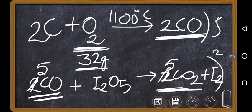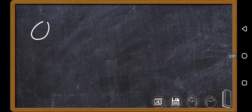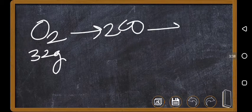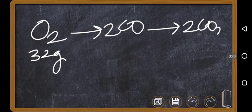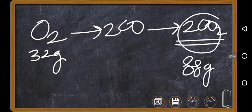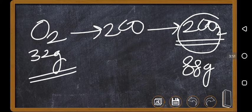So what I want to mention here is O2, which is 32 grams, is converted to 2 moles of carbon monoxide, which is converted to 2 moles of carbon dioxide. So this carbon dioxide is 88 grams, but in this, how much oxygen is present? Only 32 grams.